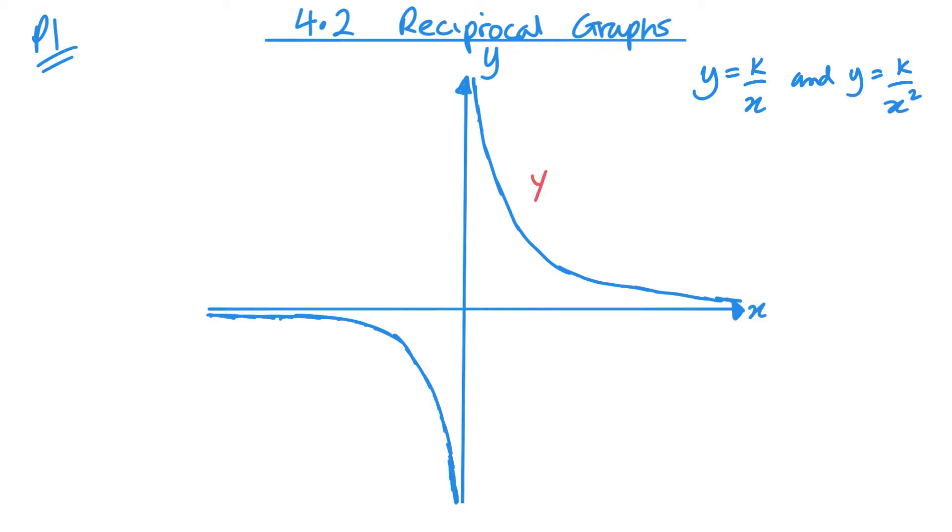That's what you have to be careful of, making sure that it always acts towards the axes. So this is y equals k over x, where k is a positive number.